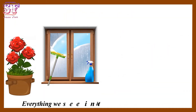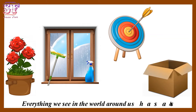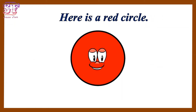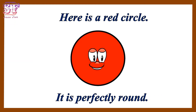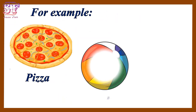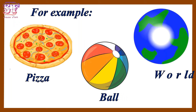Everything we see in the world around us has a shape. Here is a red circle. It is perfectly round. For example, pizza, ball, coin.